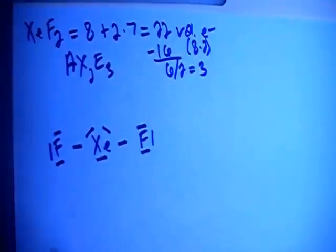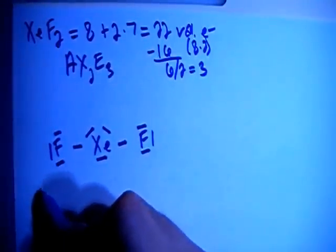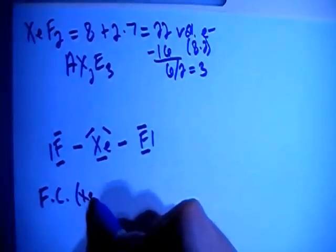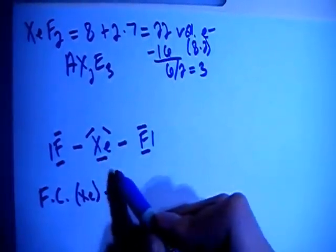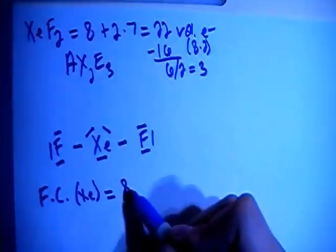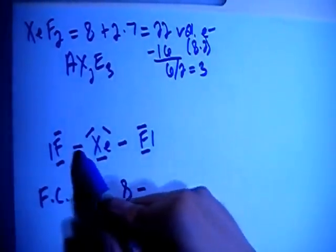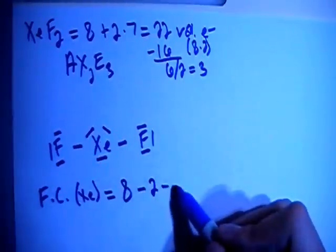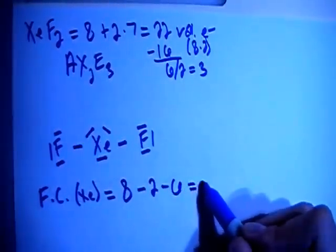So let's go ahead and check the formal charges to verify that this is correct. The formal charge on the xenon, which is the central atom, is going to be 8 valence brought in, minus 1, 2 bonds, minus 2, 4, 6 non-bonding electrons for a formal charge of 0.